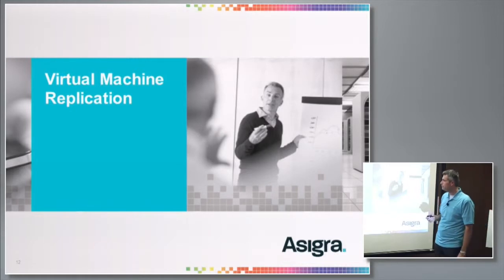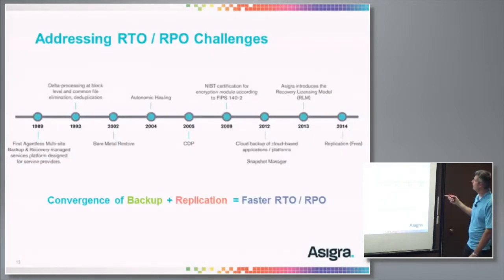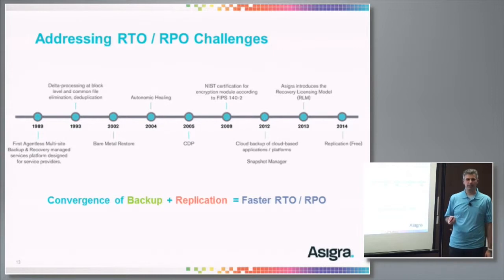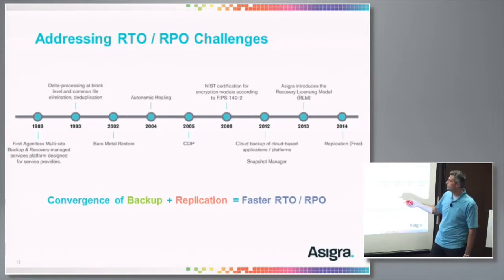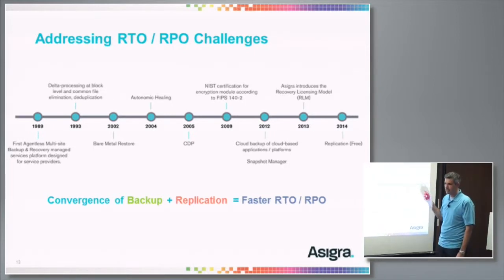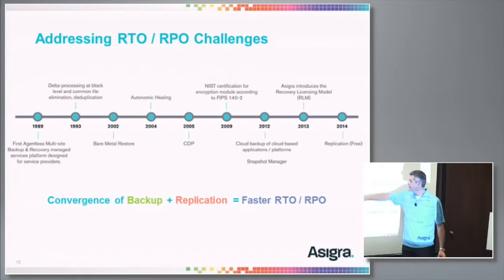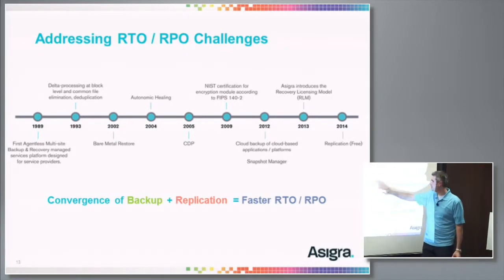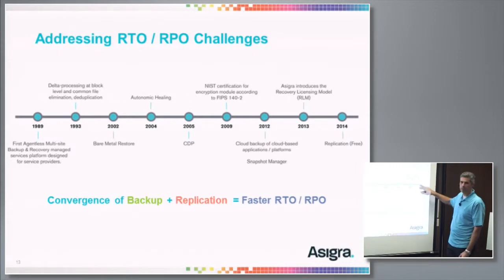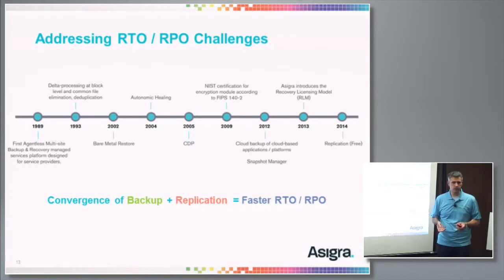Machine virtualization. This timeline demonstrates a trend. Starting when we first came out with our product, you'll notice that RTOs and RPOs are shrinking — getting ever smaller. You've got bare metal restore, CDP, all the way down to replication. So we're bringing out replication as part of the toolkit for the backup administrator.